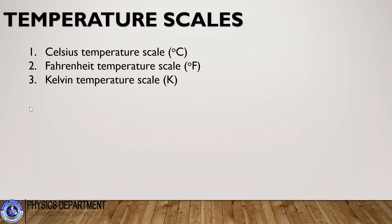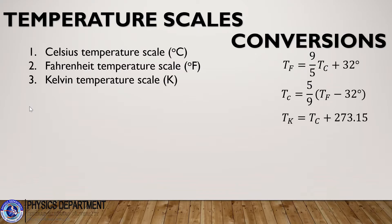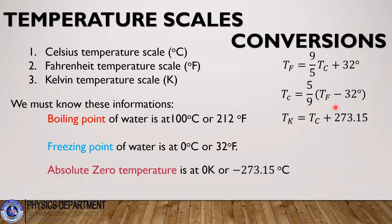So to make a useful thermometer device, we need to mark a scale on the device with numbers on it. There are three scales that we've known: the Celsius temperature scale in degrees Celsius, the Fahrenheit temperature scale, and the Kelvin temperature scale. We also have conversions from Celsius to Fahrenheit, Fahrenheit to Celsius, and also Kelvin. You can convert from Celsius temperature scale to Fahrenheit temperature scale and to Kelvin temperature scale using these three equations.